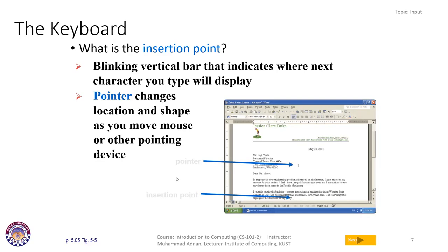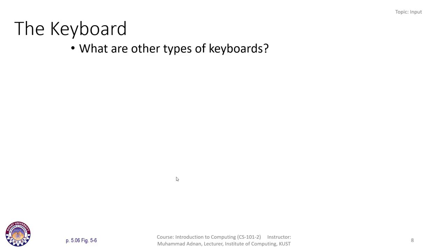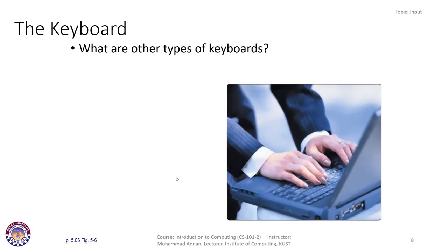The insertion point in Microsoft Word is where you insert data — it's the blinking vertical bar that indicates where the next character you type will appear. The pointer changes location and shape as you move the mouse or other pointing device. The cursor may change its appearance depending on how you enter data or where the cursor is located.